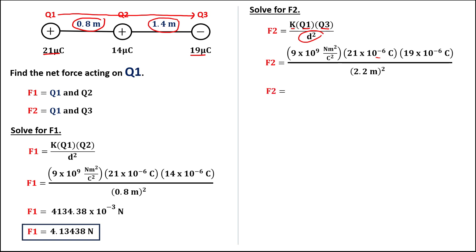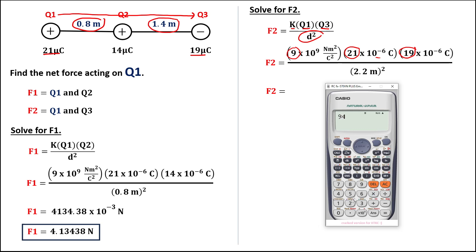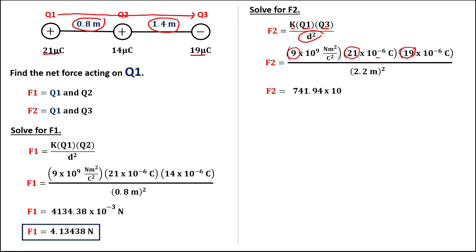To solve for force 2, multiply the three numbers: 9 times 21 times 19, then divide by 2.2 to the power 2. That equals 741.94, times 10 to the power negative 3, in newtons. Since the exponent is negative 3, move three decimal places to the left, giving force 2 equal to 0.74194 newtons.